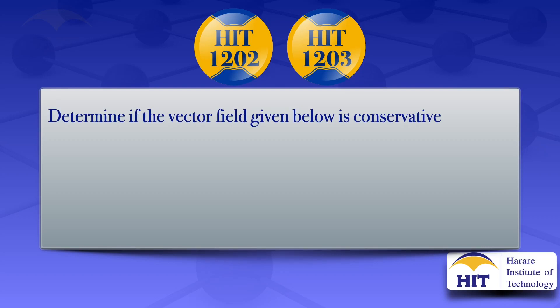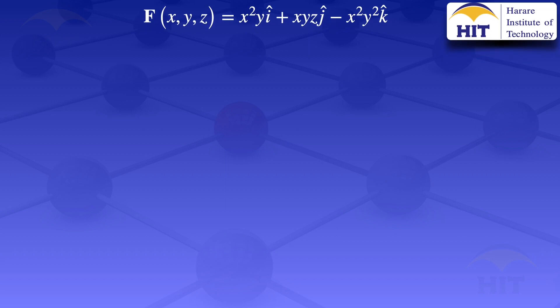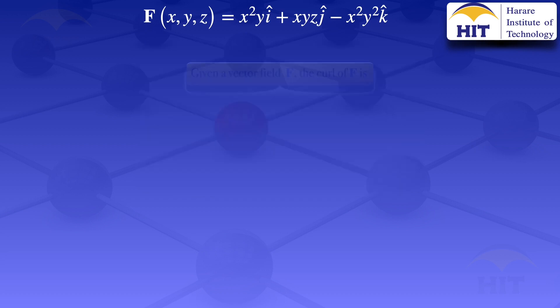In this tutorial we're going to check if the vector field F, which equals x²yî plus xyzĵ minus x²y²k̂, is conservative. To check if it is conservative, we have to evaluate its curl and check if the curl equals the zero vector. If it equals the zero vector then the vector field is conservative, but if it does not equal the zero vector then the vector field will not be conservative.